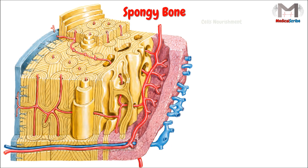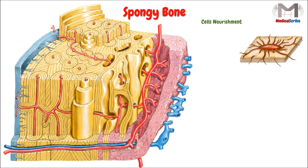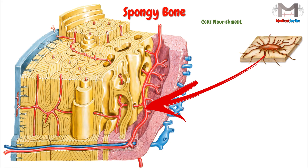If we want to know how these cells get their nourishment, we have to understand some details first. The osteocytes are located in the lacunae, and these lacunae have canaliculi, which are channels that move and interconnect with the adjacent cavities. So the cells can get their nourishment from the vessels inside those cavities through the canaliculi, which in fact act as the haversian canals of the compact bone.